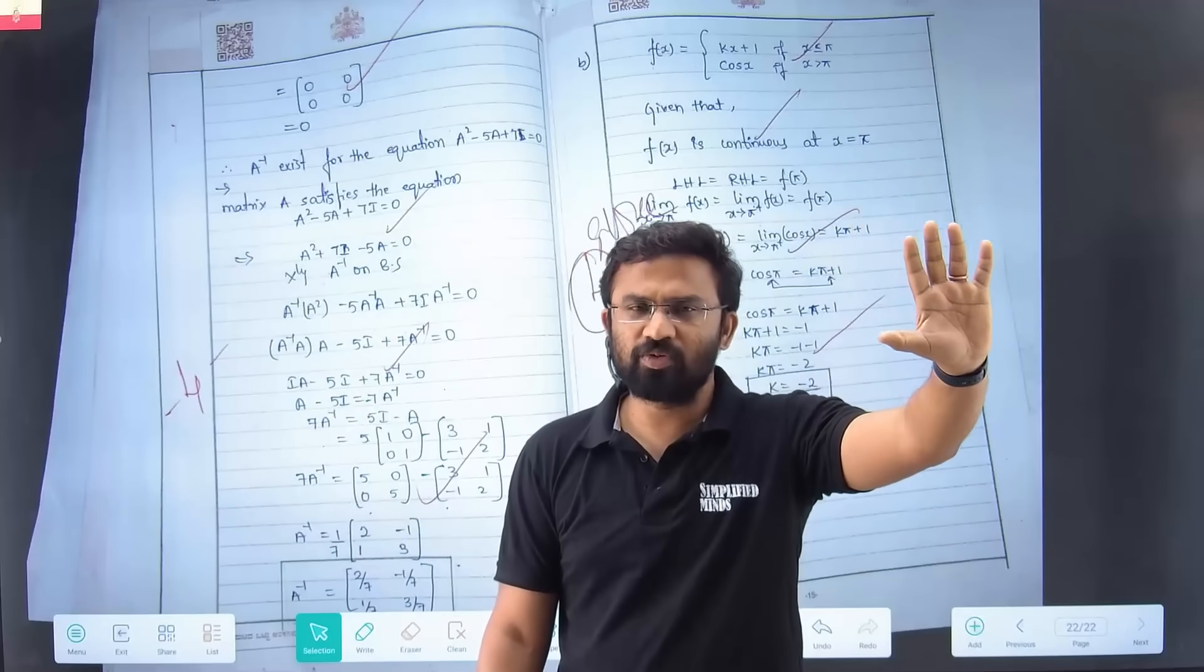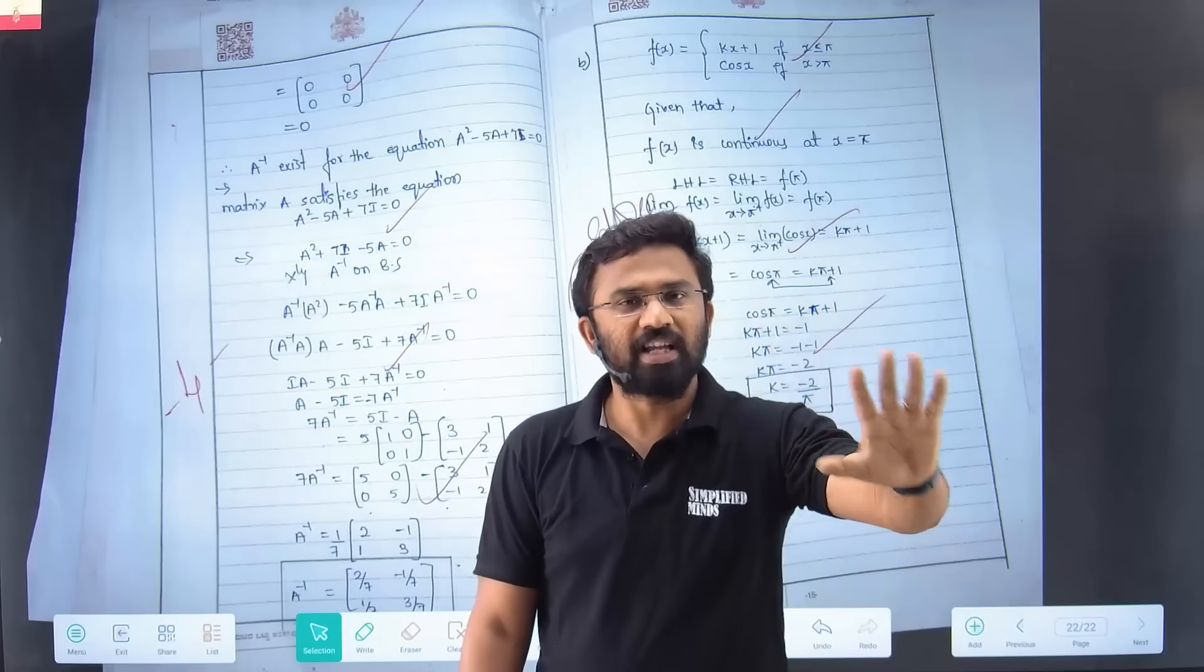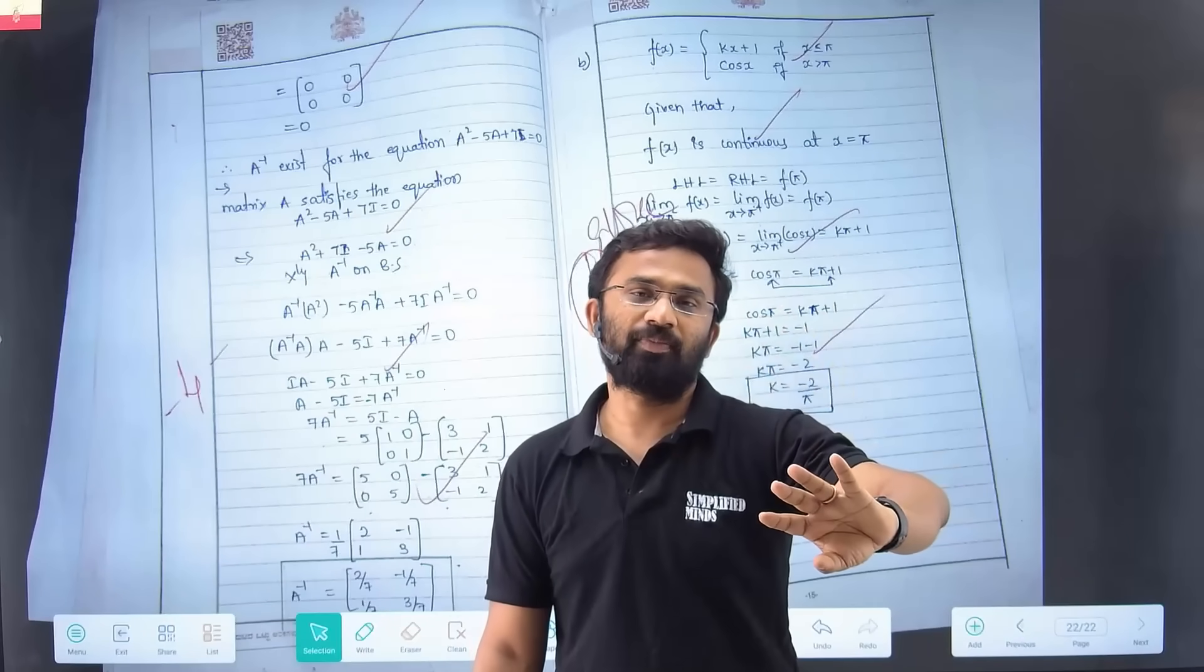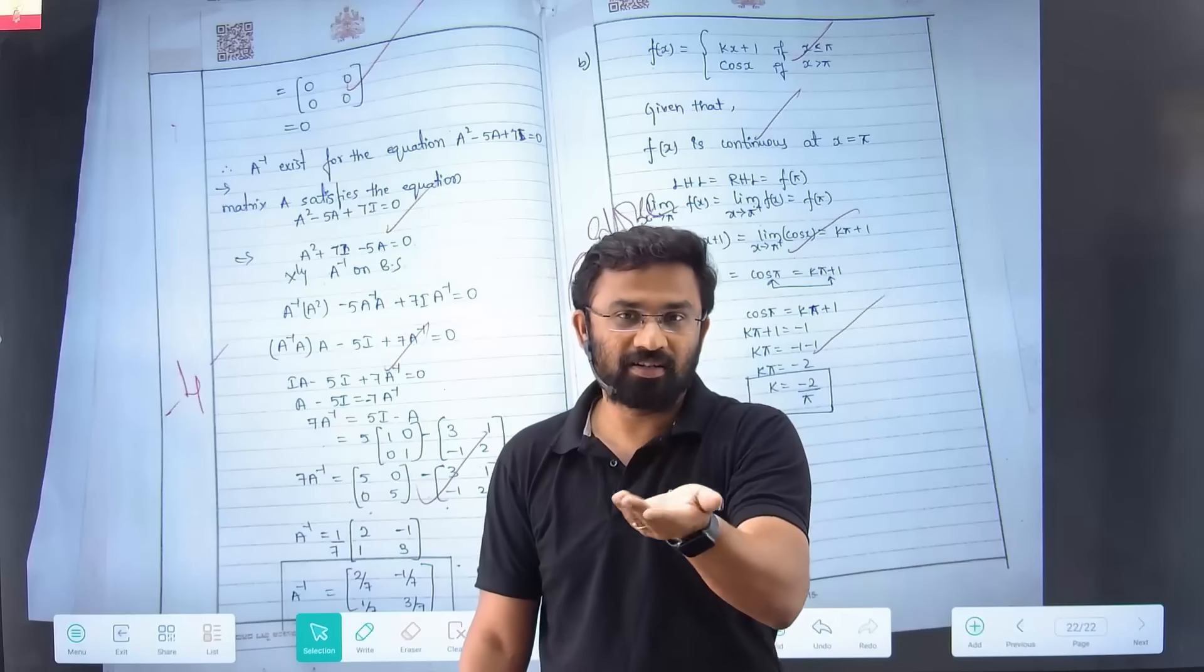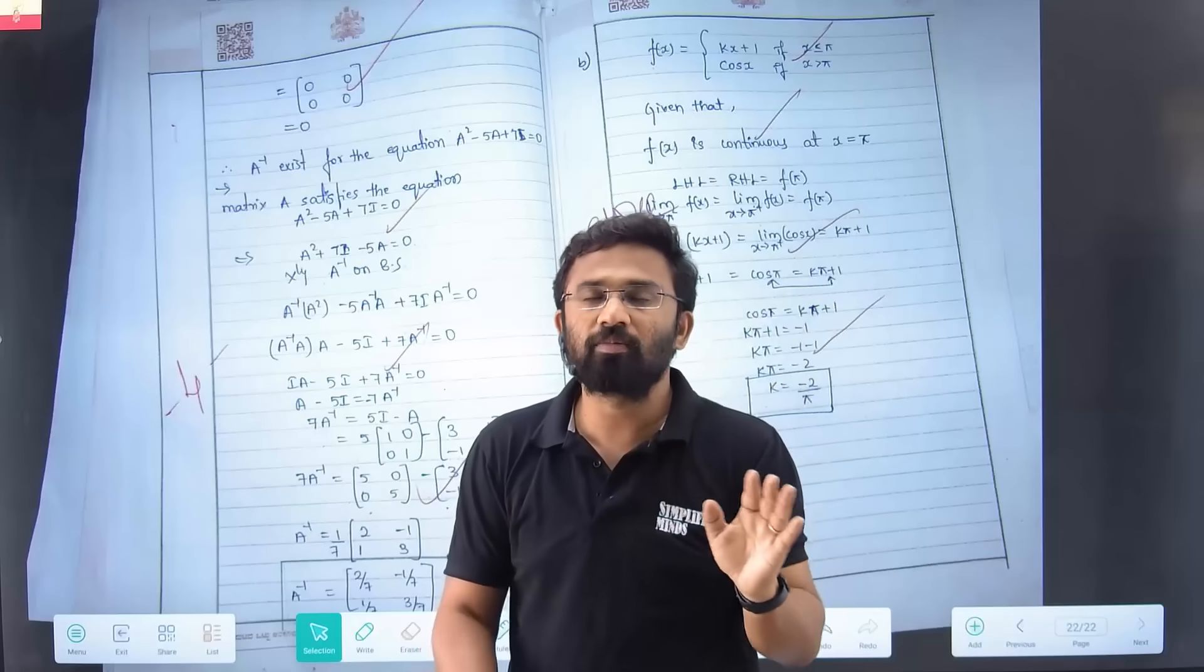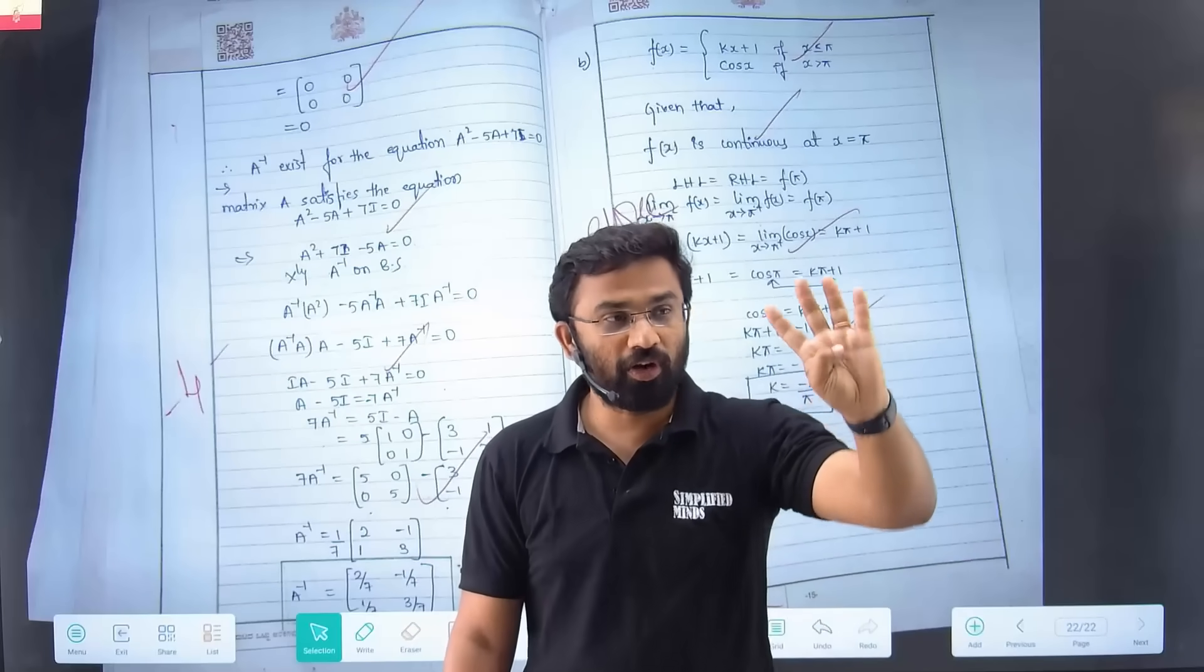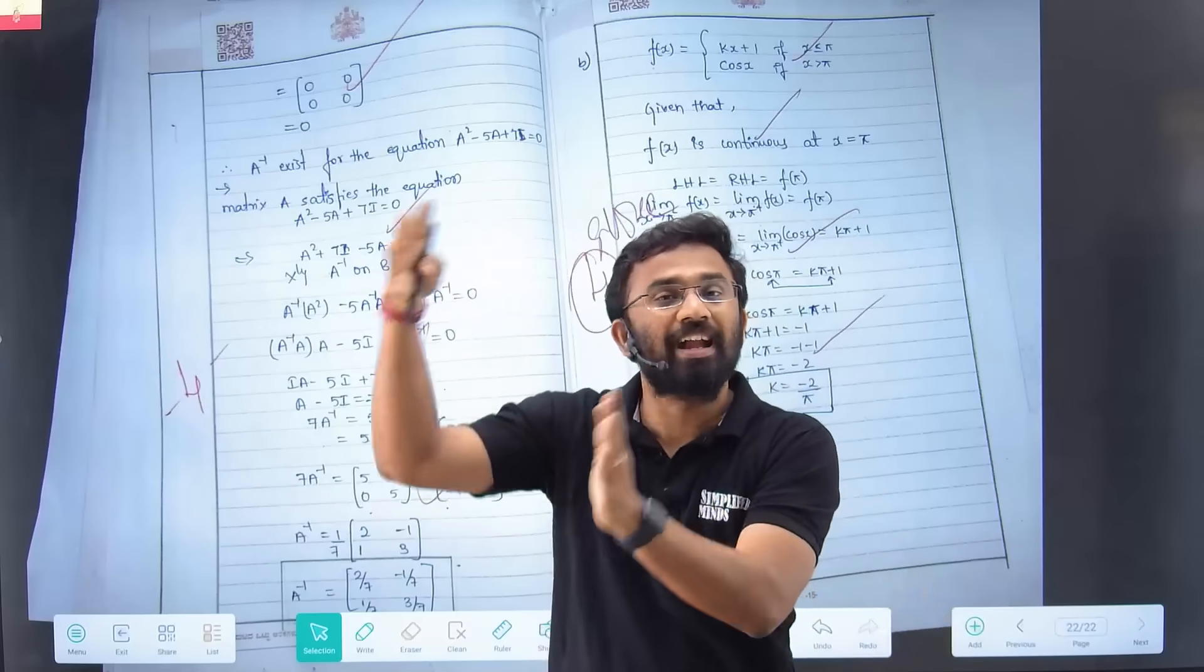Very important tip: write first MCQs, then fill in the blanks, then whatever section you know very well - you can choose part D or part C. For example, you want to attend four questions for 20 marks. What you know perfectly, write that perfectly. Only write the required number of questions. At the end, write all the extra questions. Beginning itself writing extra questions is a waste of time. When you already wrote the four questions, why write extra questions at the beginning? Write all extra questions at the end. That's very important.